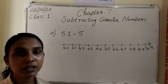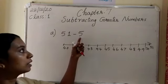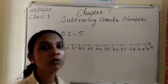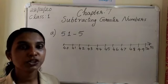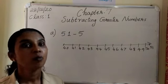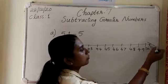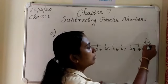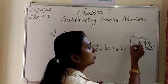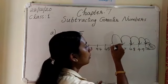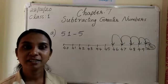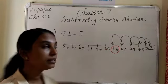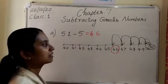How do you subtract using a number line? You have to count backward. How many steps do you have to count backward? 5 numbers. So you have to move backward 5 steps. You start from 51. Mark the number 51 on the number line, then count backward 1, 2, 3, 4, 5. What is your answer? You counted backward 5 steps. The answer is 46.